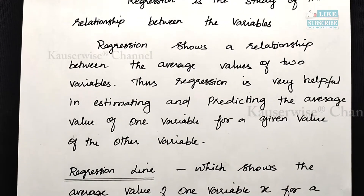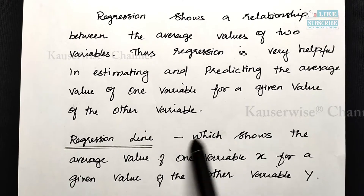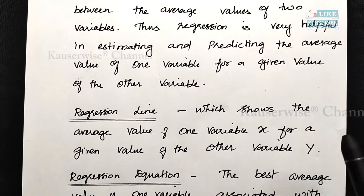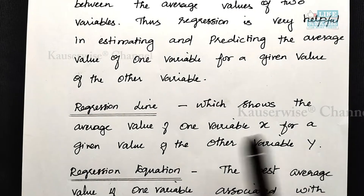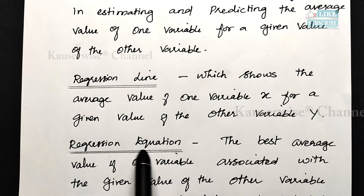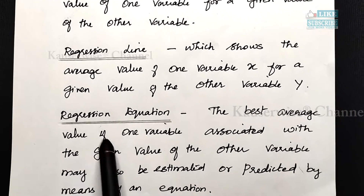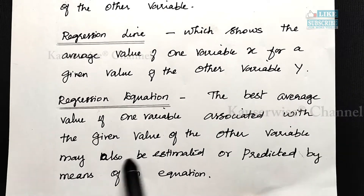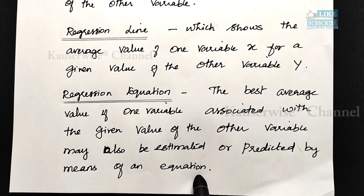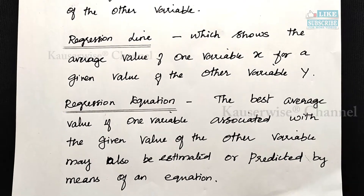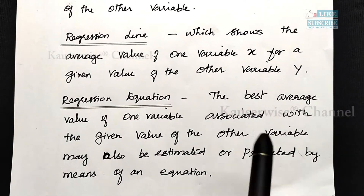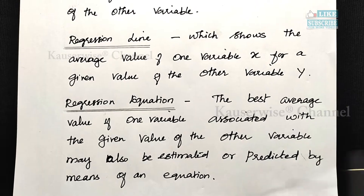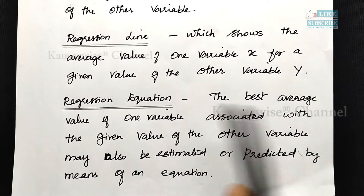Here we have the regression line. What is a regression line? It shows the average value of one variable — that is x — for a given value of the other variable, y. With the help of one given variable, we are going to find out the other variable. We find the best average of one variable which is related to the other variable, and we estimate or predict using a regression equation.